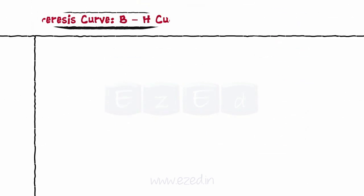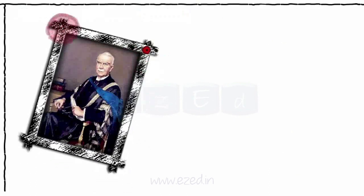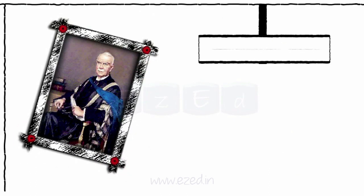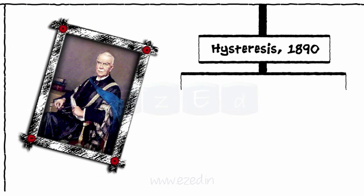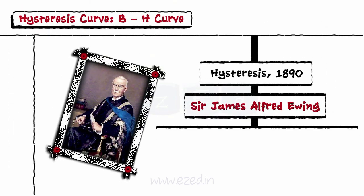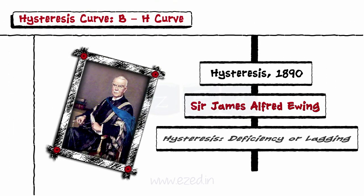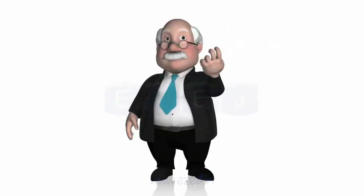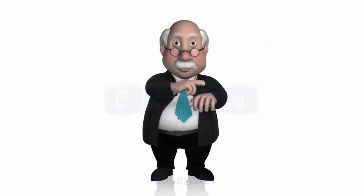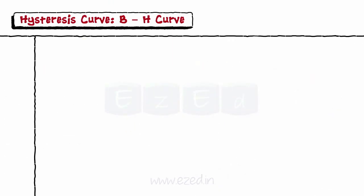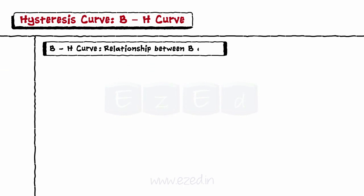Let's study the hysteresis loop or BH curve. The term hysteresis was coined around 1890 by Sir James Alfred Ewing to describe the behavior of magnetic materials and is derived from an ancient Greek word meaning deficiency or lagging behind. Thus, BH curve determines the relationship between magnetic flux density B and magnetic field strength H.